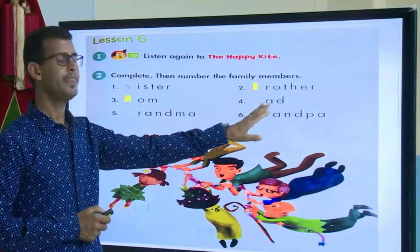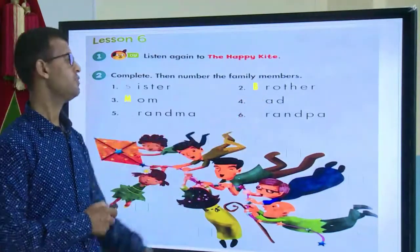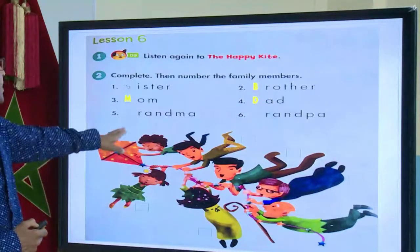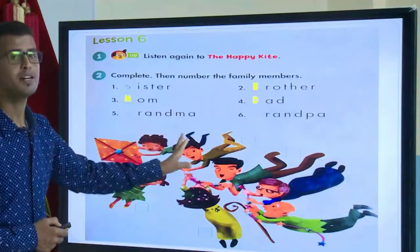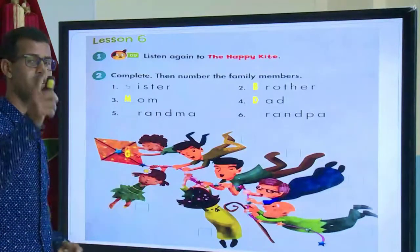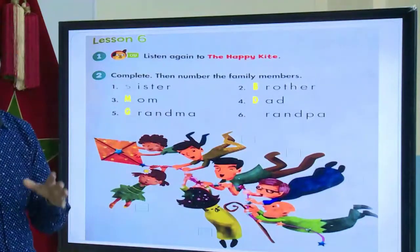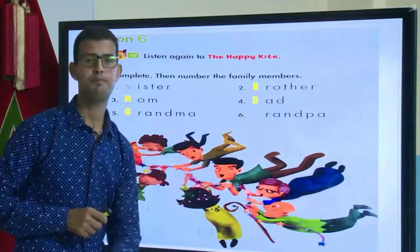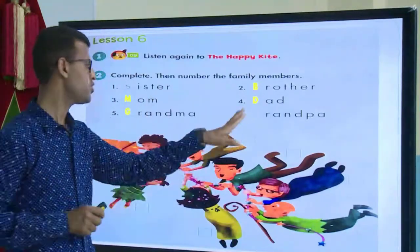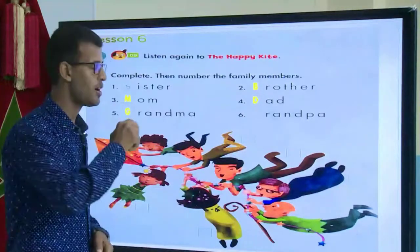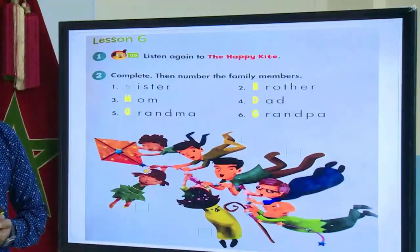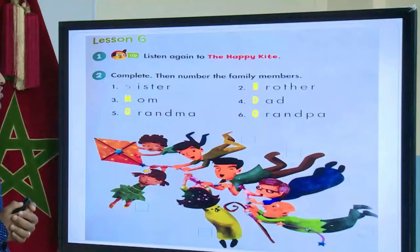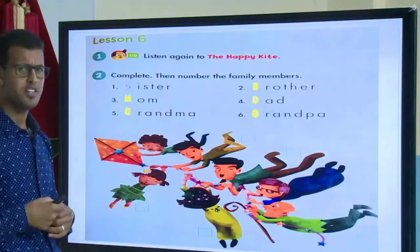Number four is dad — the missing letter is D. The next one is grandma — what is the missing letter? Good job — G, so grandma. And the last one is grandpa — the missing letter is G. Great, so listen and repeat the words: sister, brother, mom, dad, grandma, grandpa.